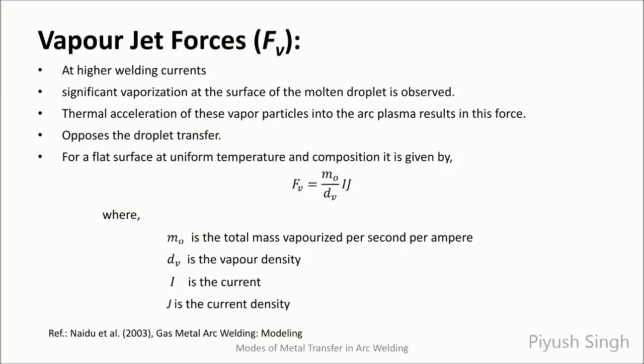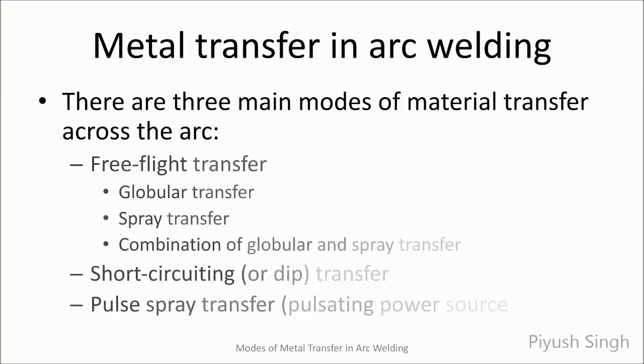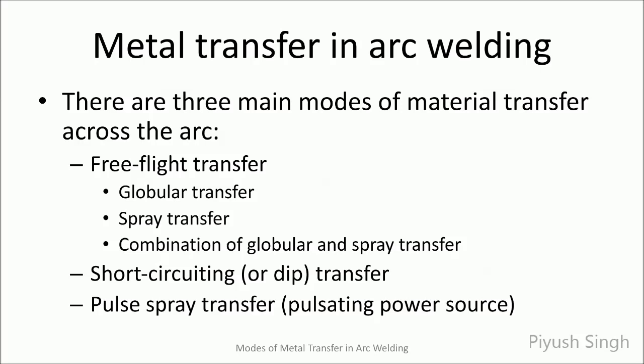This vapor jet force for a flat surface at a uniform temperature and composition is given by this equation. After discussing the forces involved in metal transfer dynamics, let us see the principal modes of metal transfer. There are three main modes: free flight, dip or short circuit transfer, and pulse spray transfer, which is observed in a pulsating power source. The free flight transfer can again be classified into three types: globular transfer, spray transfer, and a combination of globular and spray transfer.